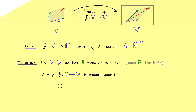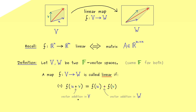We can distinguish addition and scaling. Starting with vector addition, as in the picture above, we consider u plus v. On the right-hand side, this should also be a vector addition — specifically f(u) plus f(v). Note that there are different plus signs in the equation: the plus on the left-hand side denotes vector addition in V, and the one on the right-hand side denotes vector addition in W. The vector spaces could be completely different, and therefore the vector addition is a different operation. However, a linear map translates one vector addition into the other — this is what we mean by conserving the linear structure.